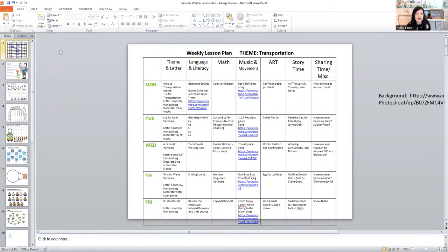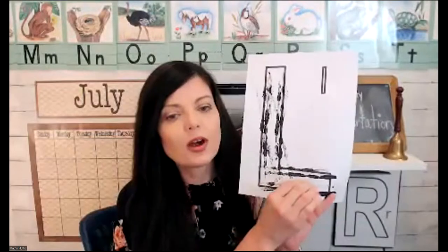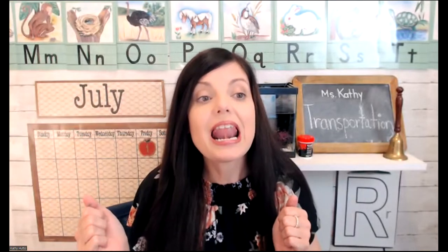Okay, for Tuesday, let's move on to Tuesday. We did L is for land, land vehicles, and we practiced the letter L sound. This is how we decorated with a car: we just dipped a toy car into black paint and just let it drive all over the letter L. Remember, L is for land vehicles like cars or buses or trains or trucks. And the hand motion for L is this, and then the letter L sounds like luh, sounds like luh.